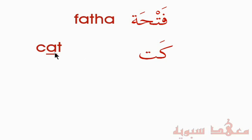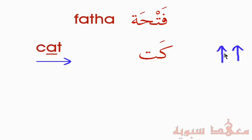In English we write from left to right, while in Arabic we write from right to left. So in English, when we read a word, we read it this way. In Arabic, it goes the other way. We read the first letter and what haraka it has first, then the second letter and what haraka it has, and so on.